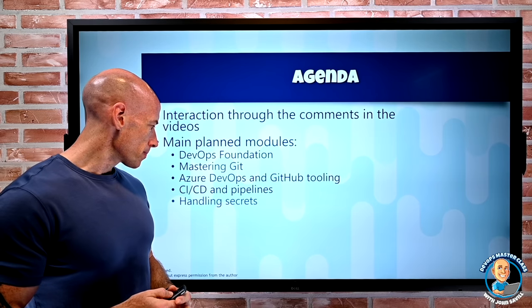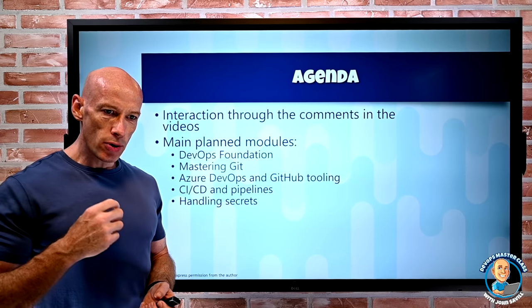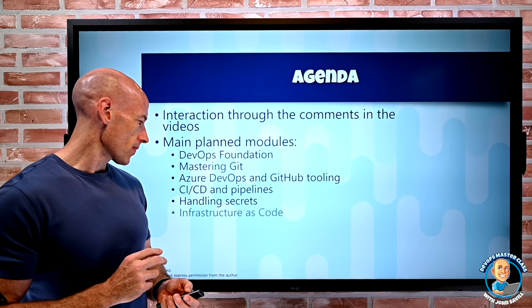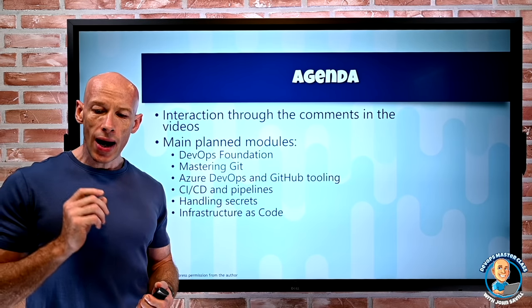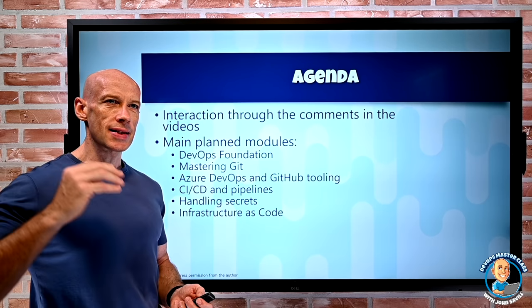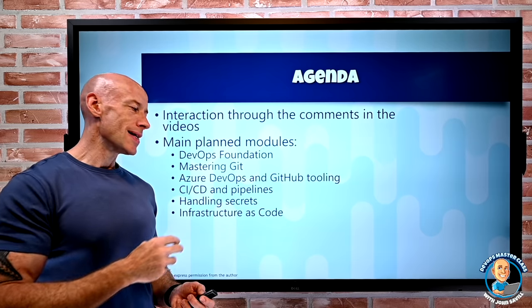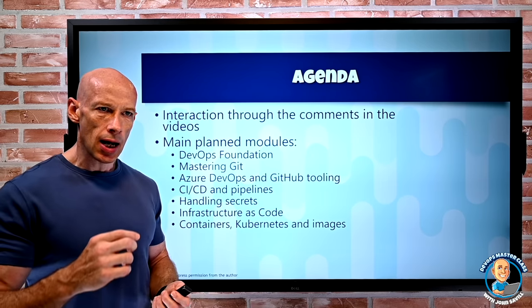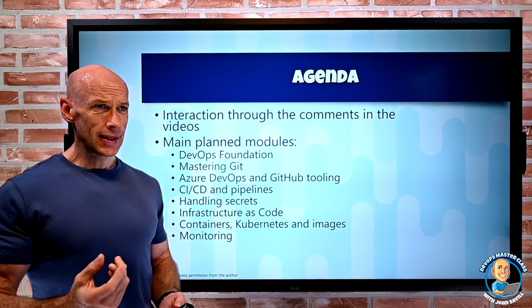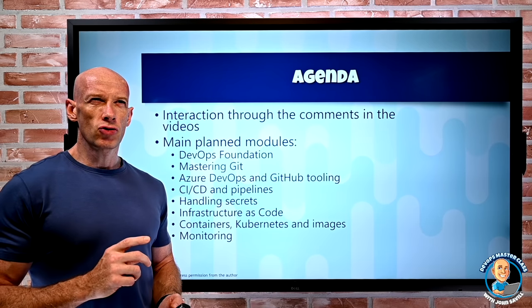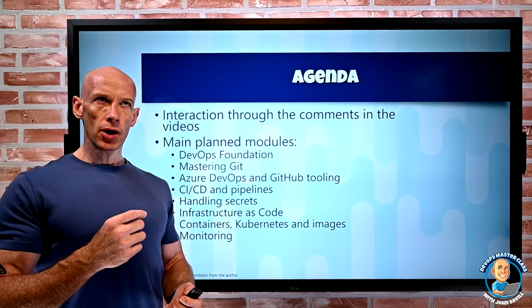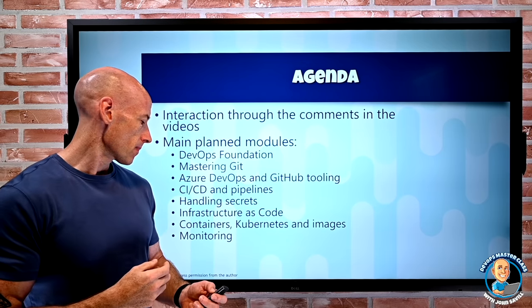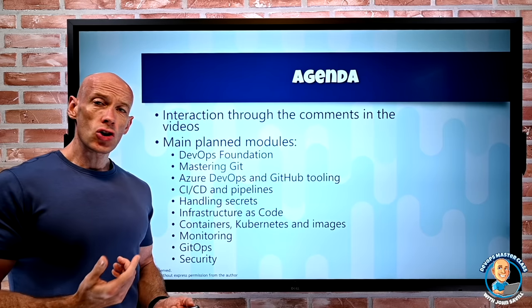Everyone should understand DevOps — it really is a universal thing right now. I want to look at tooling: Azure DevOps, GitHub, how they differ, where they're going. Think about continuous integration, continuous delivery, continuous deployment, and how pipelines play into that. Handling secrets is a really important topic — don't have secrets in your code, so where do we put them? Infrastructure as code is another critical element. We'll look at containers, Kubernetes, images, image builders, repositories, registries. Monitoring is huge to DevOps. And then GitOps and security.